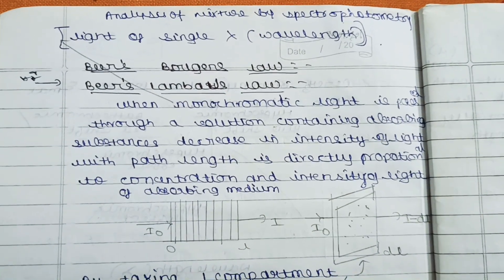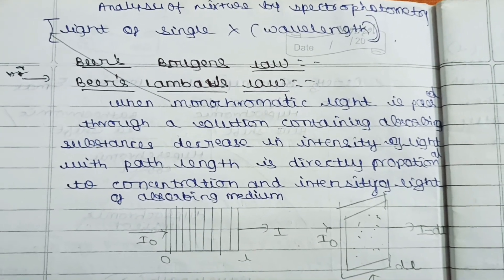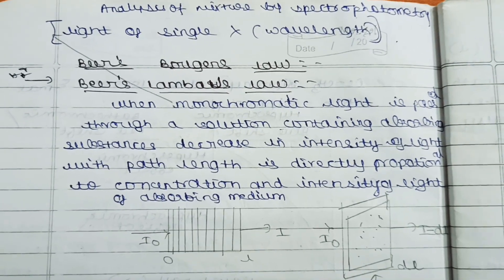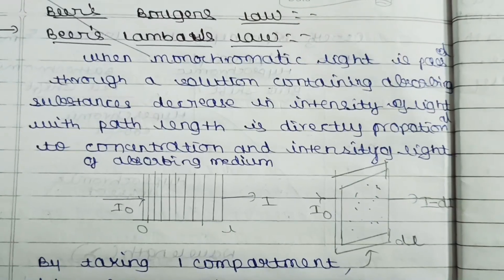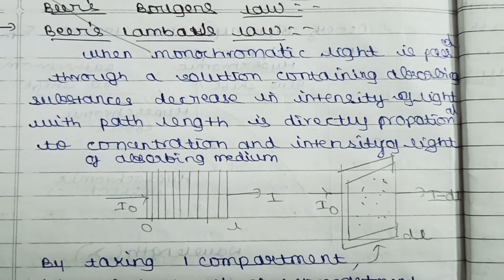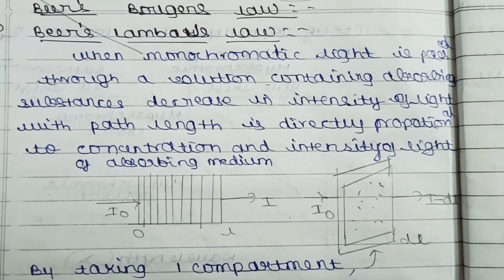When monochromatic light is passed through a solution consisting of absorbing substances, the compound to be analyzed is added and the monochromatic light is passed through. Then, decreasing the intensity of light with path length is directly proportional to concentration of absorbing medium and intensity of the light.